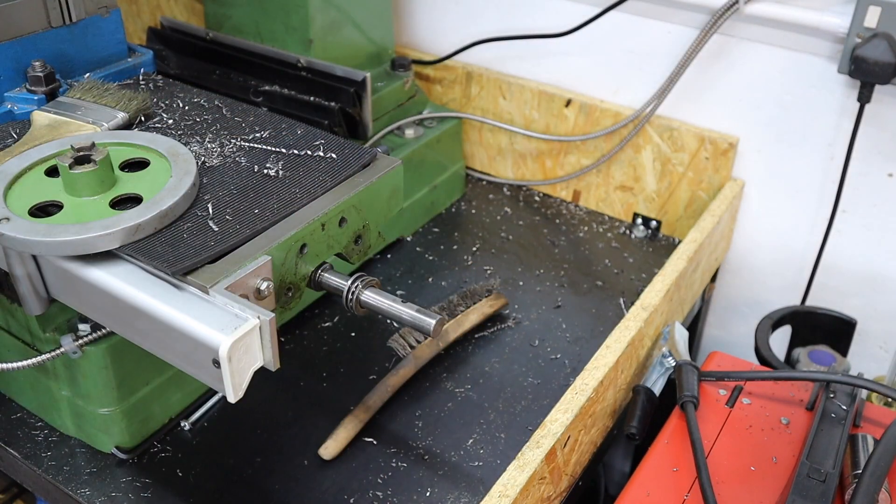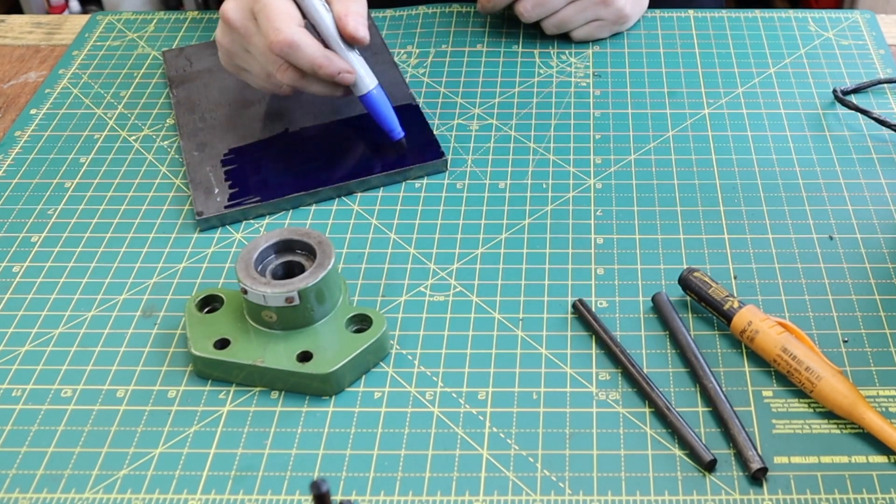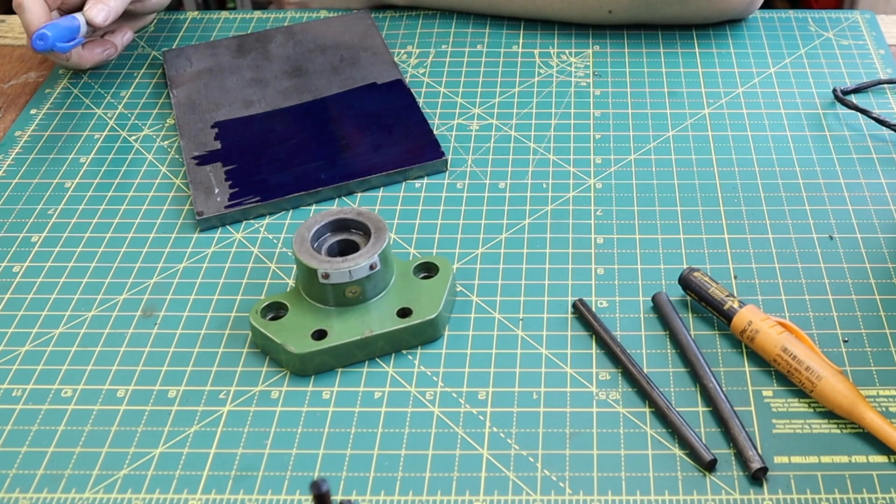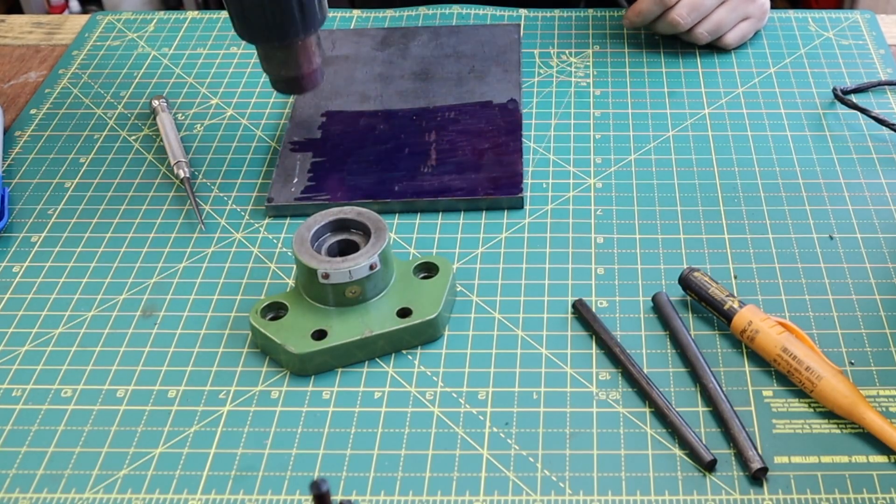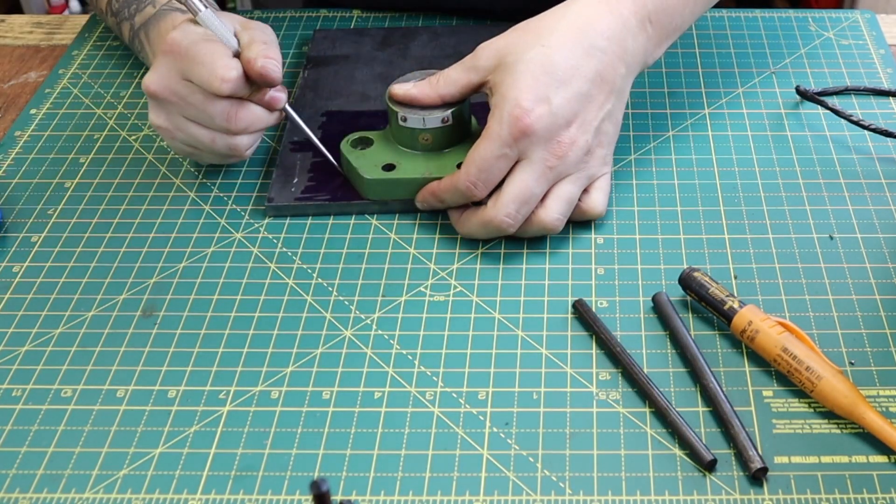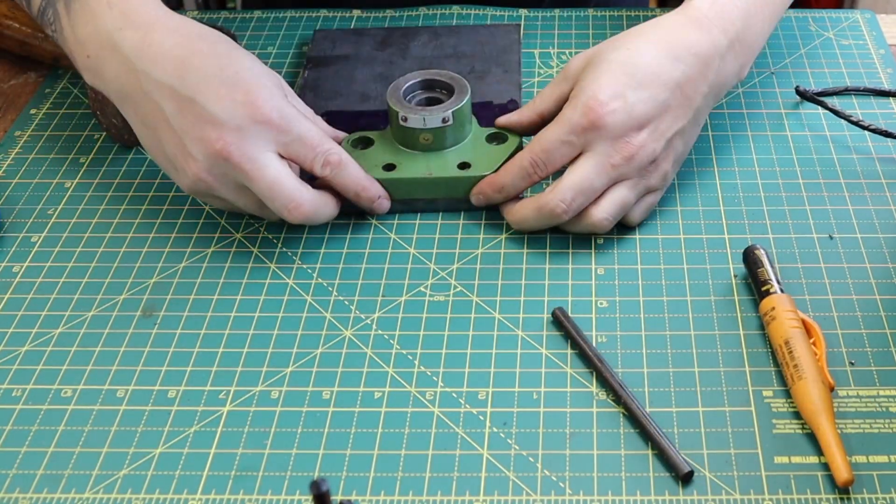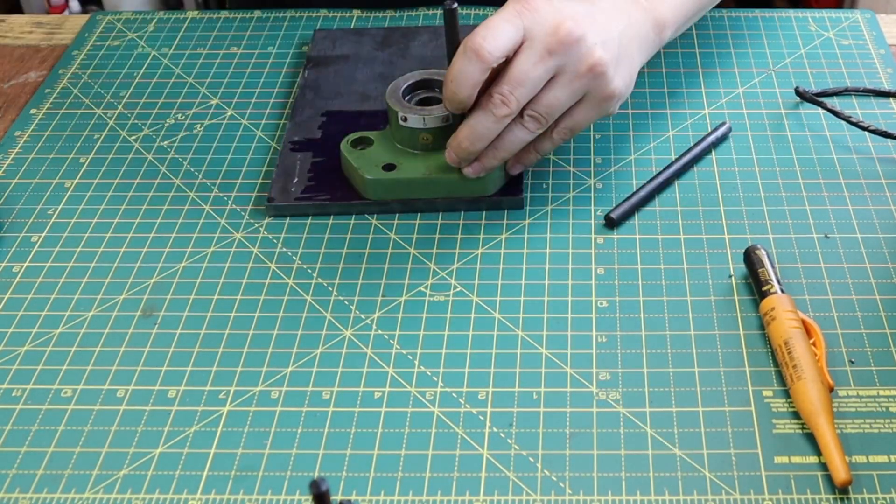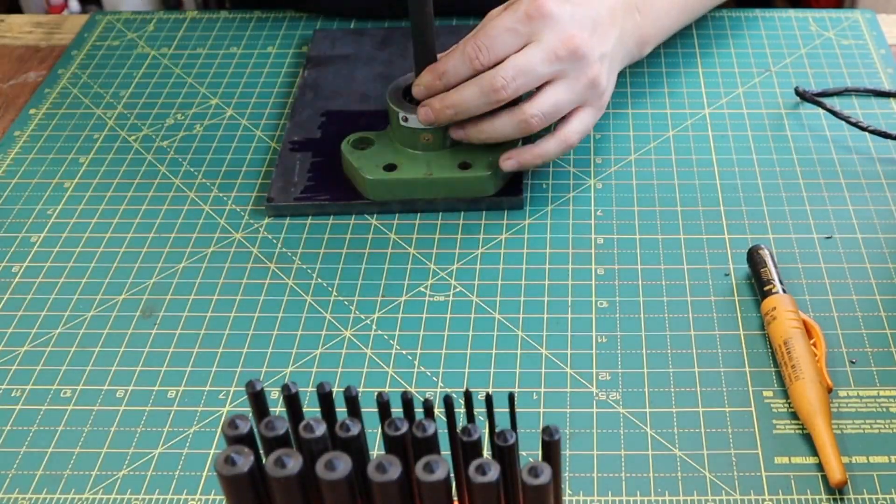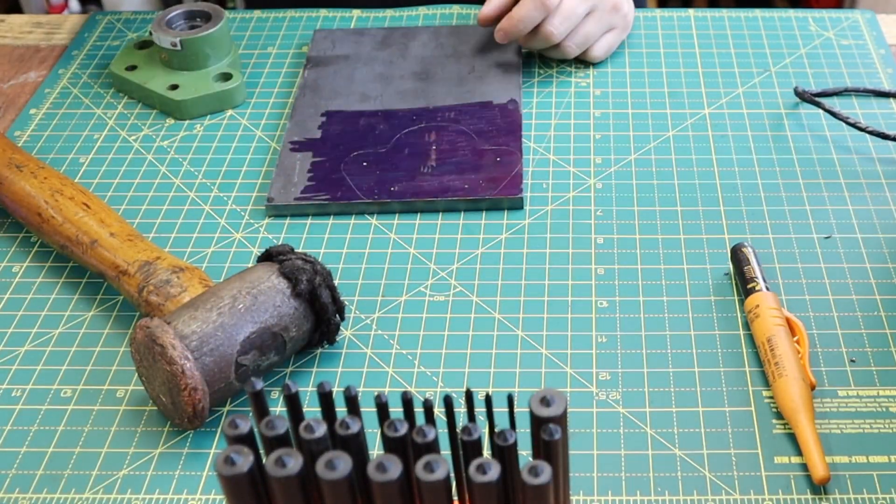With the end plate now off we head back over to the bench where we're going to be laying this out on a piece of 10mm steel. Just using a blue sharpie and scribing around it I can get quite accurately an outline, and then just using some transfer punches we can transfer the holes across and center punch them.